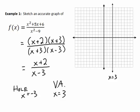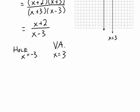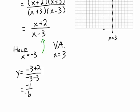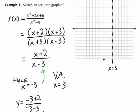The hole is at x = -3, but we need to determine the coordinates of the hole. We substitute x = -3 into the simplified function: (-3 + 2) / (-3 - 3) = -1 / -6 = 1/6. So the coordinates of the hole are (-3, 1/6), and we plot that point on the graph with an open circle.